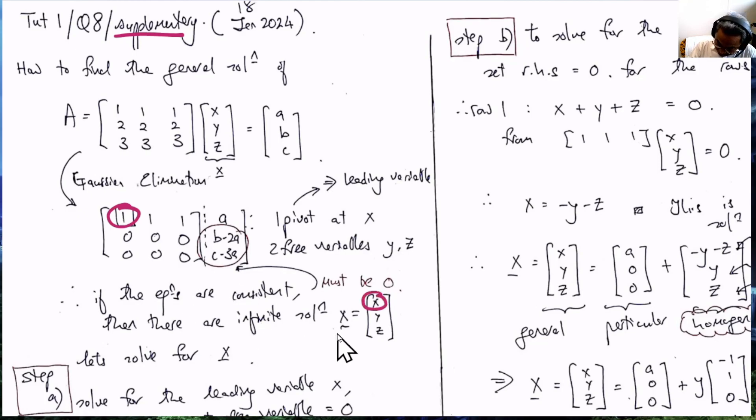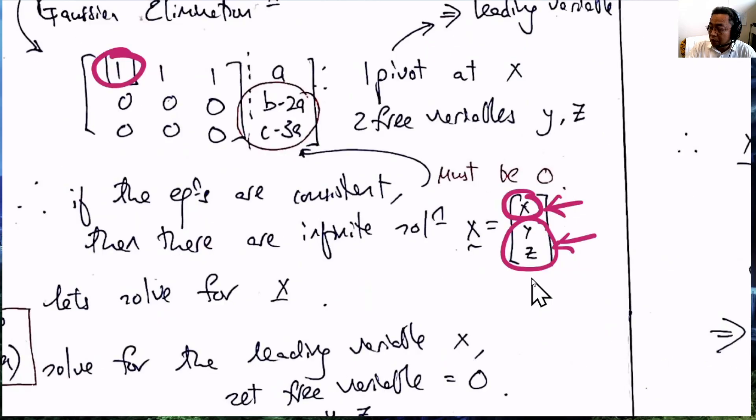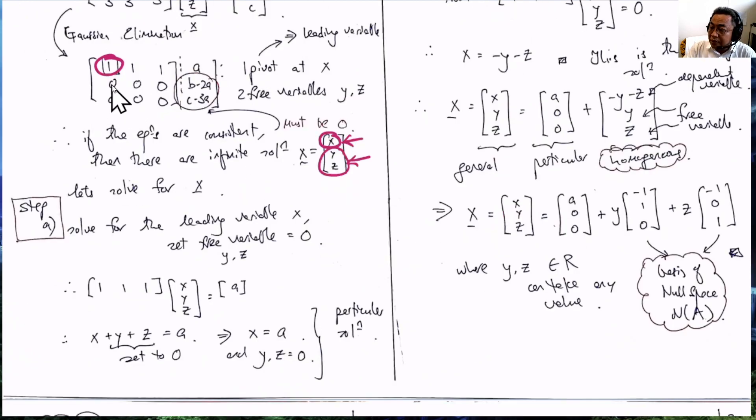So if this is the dependent variable and these are the free variables, we then will have infinite solutions if B lies in the column space of A. Since the other two equations result in zeros, let's ignore them first.